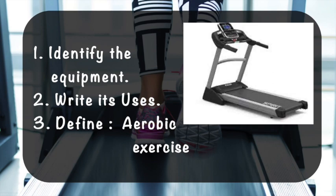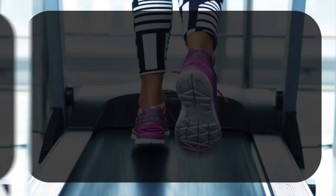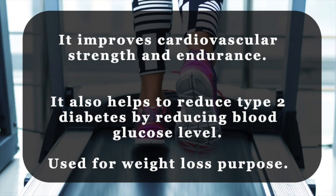Moving to another flashcard topic. The questions are: identify the equipment, write its uses, and define aerobic exercise. The equipment given in this picture is a treadmill. The treadmill is a type of exercise equipment used for efficient aerobic workout or aerobic training. Working on a treadmill on a daily basis enhances a healthy lifestyle and makes one fit. It also improves cardiovascular strength and endurance.